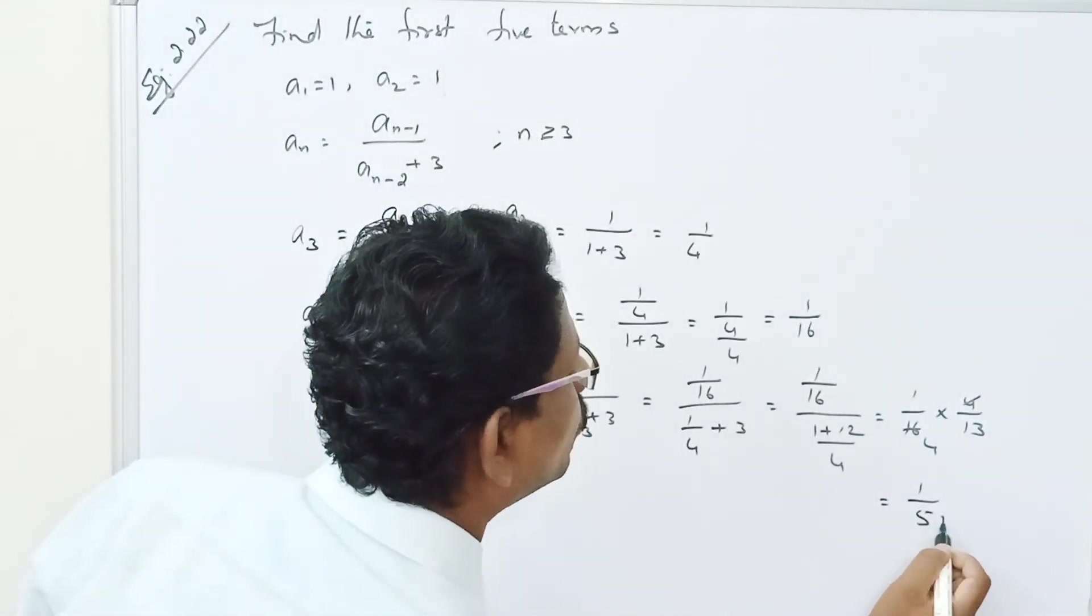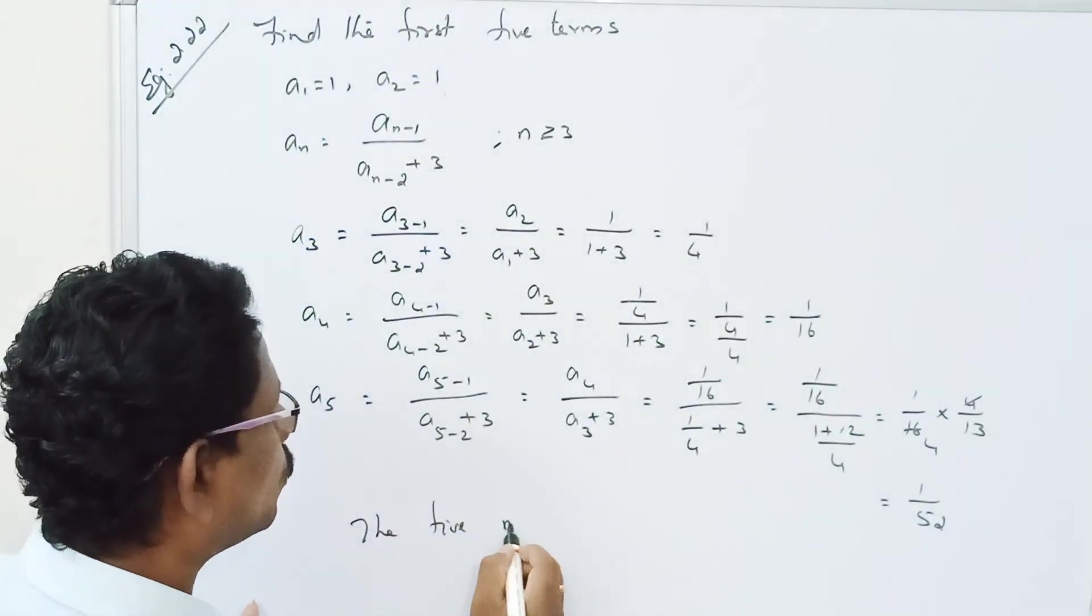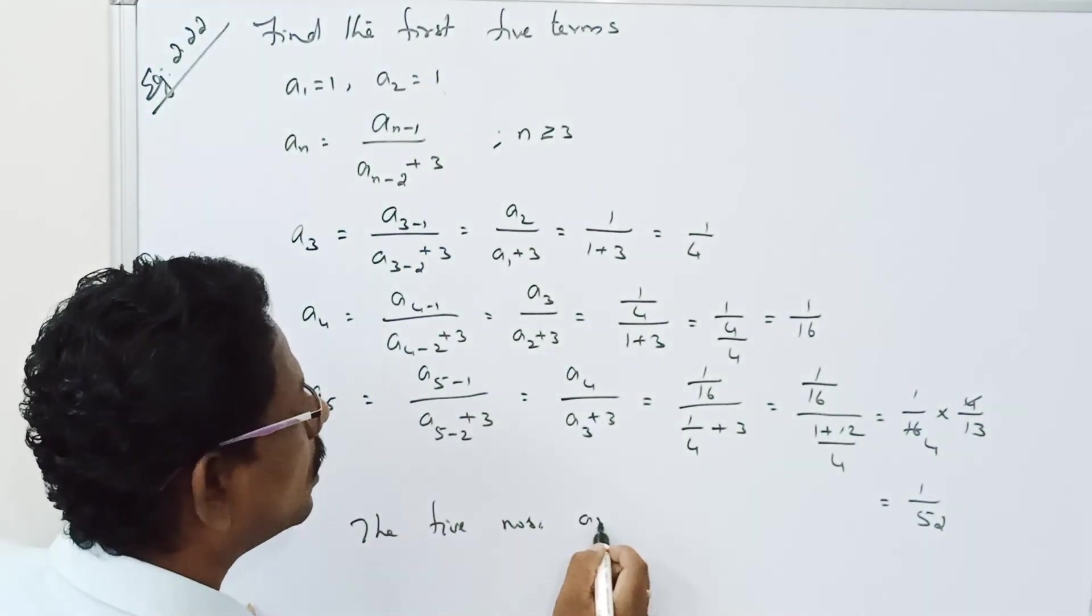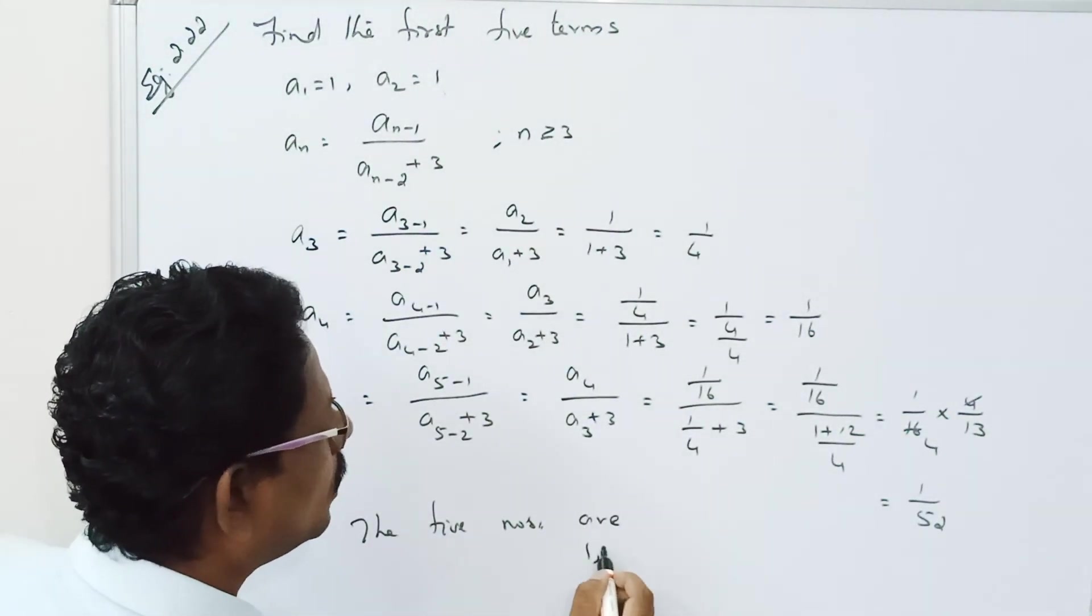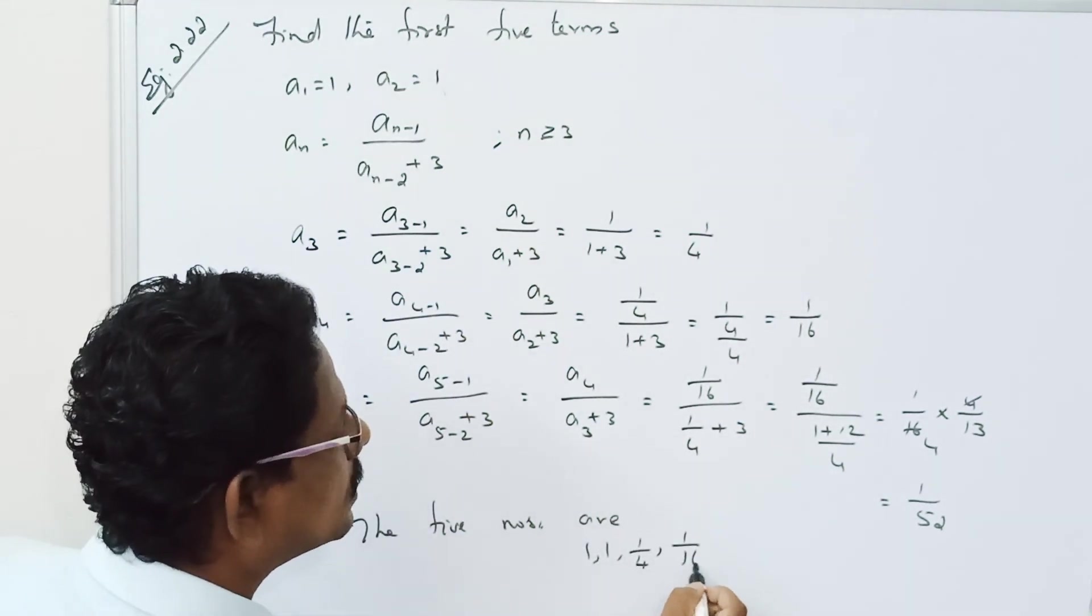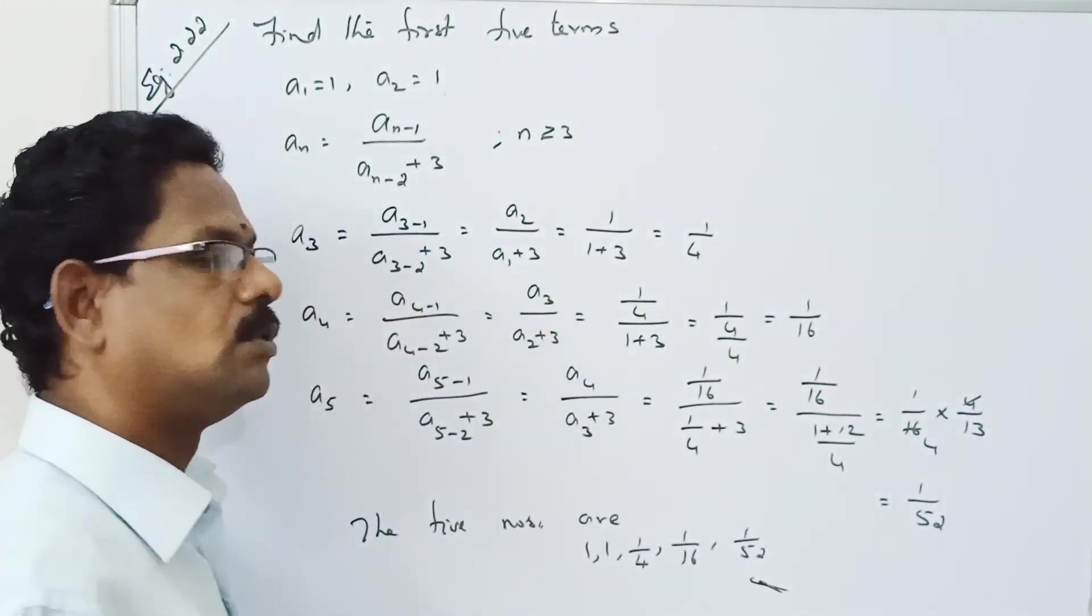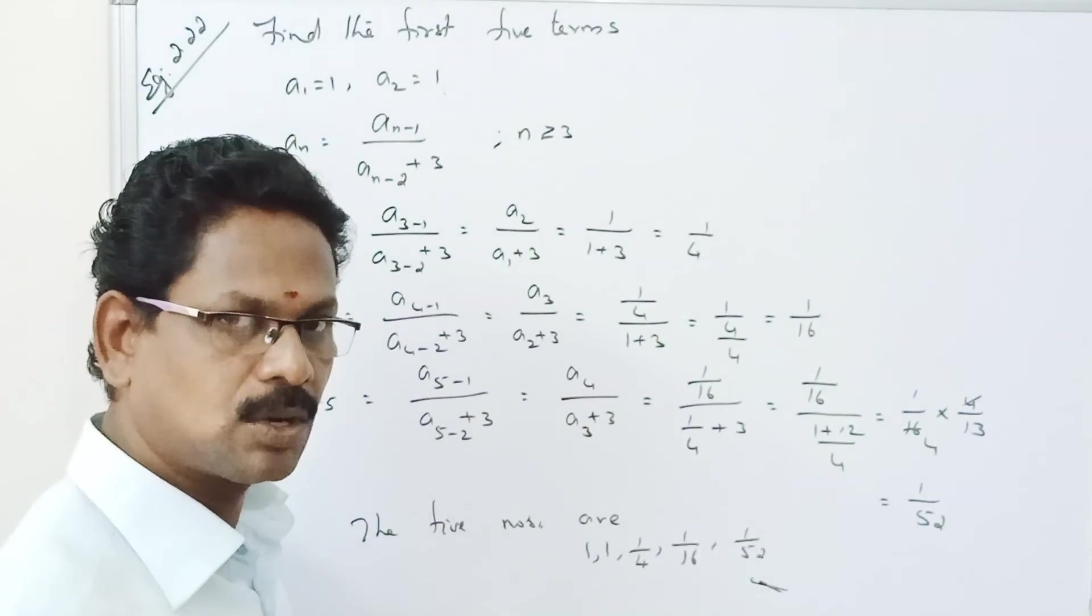52. Therefore the five terms are 1, 1, 1 by 4, 1 by 16, 1 by 52. These are the five terms. For questions, study well. Supreme Krimas.